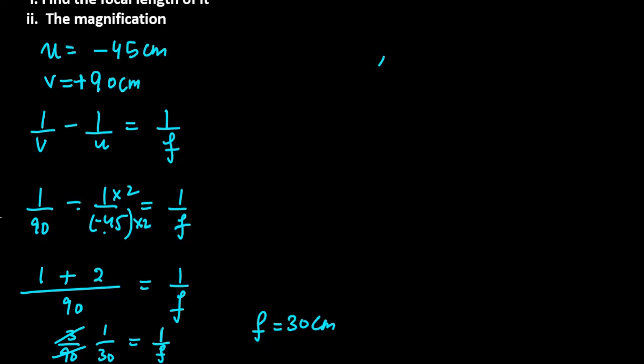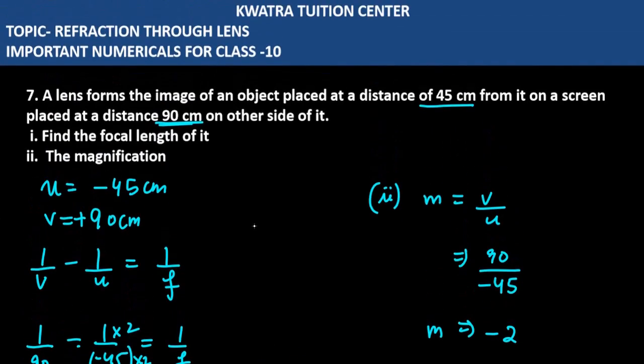Second, what is the value of magnification? How will you get the value of magnification? V over U. And what is our value? 90. U is minus 45. So how will magnification come to you? Minus 2. So yes, this is your answer for question number 7. Now we will be moving to question number 8.